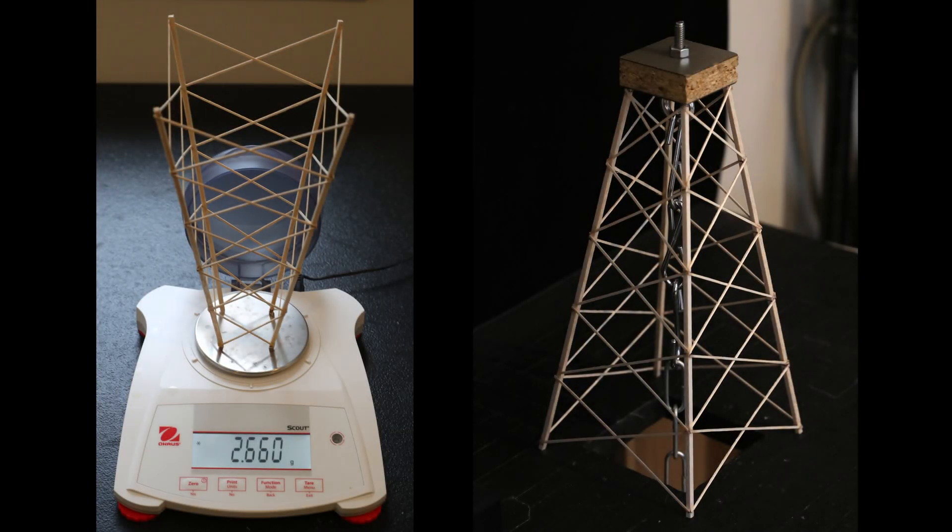This tower was 2.66 grams or 0.2 grams heavier than the build with the Z style cross bracing. Let's see if that extra mass was helpful. Remember, the reason for using the X base design was to effectively cut the individual cross members in half which makes them 4 times stronger according to our buddy Euler. Don't forget to glue the center joint in the middle of the X's.